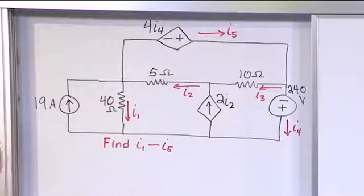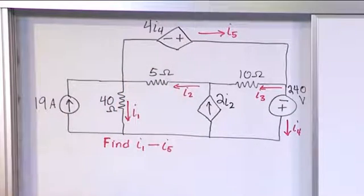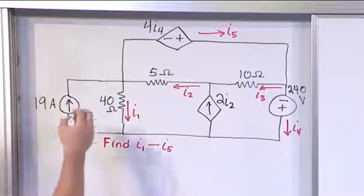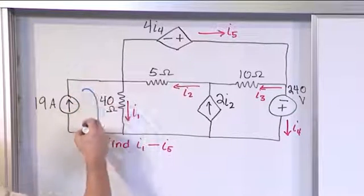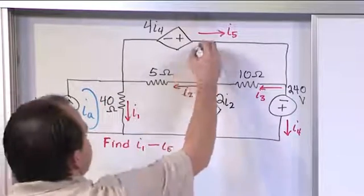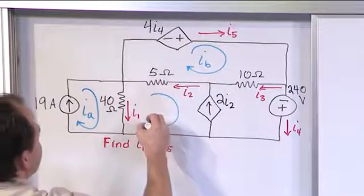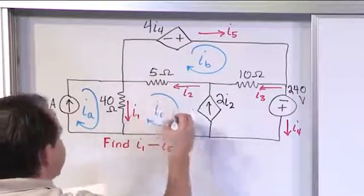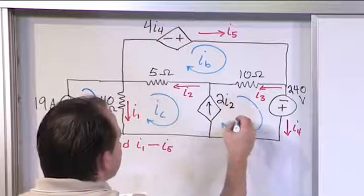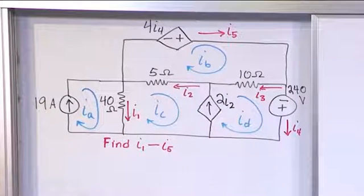So here we have one, two, three, four meshes. So one more mesh than we're typically used to dealing with. So let's go in and label them. This one we're going to call I sub A. This one up here we'll call it I sub B. This one down here we're going to call it I sub C. And this one over here we'll call I sub D. And what we're trying to actually calculate in the circuit...